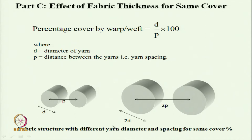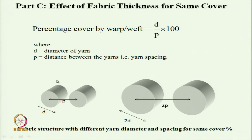Two types of yarns were produced: a finer yarn and a coarser yarn. To keep the cover the same for a coarser yarn, we have to increase the distance — if the diameter is doubled (2D), then the spacing between yarns has to be doubled. So percent cover remains the same. However, fabric thickness changes: with yarn diameter D, fabric thickness is typically 2D (warp + weft diameter), while with doubled diameter it becomes 4D.